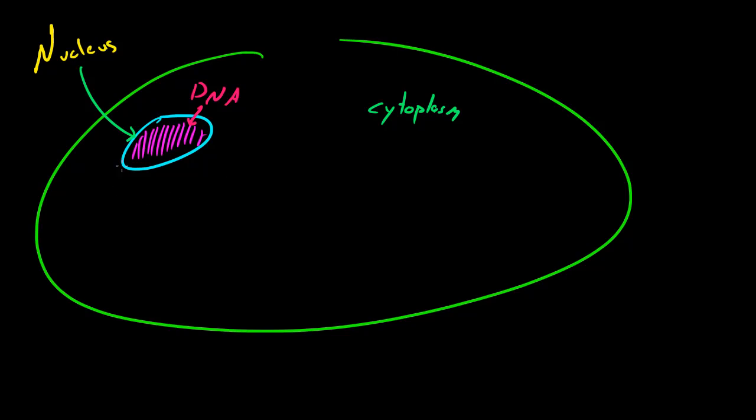This light blue thing is actually called the nuclear membrane, or some people call it the nuclear envelope. Your nucleus is basically protected by this nuclear envelope, the same way that your cell is protected by a cell membrane.